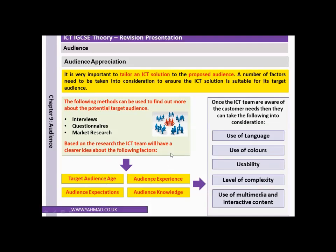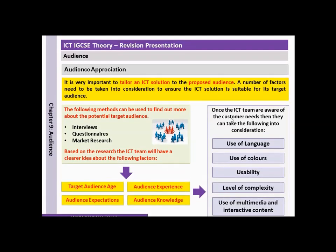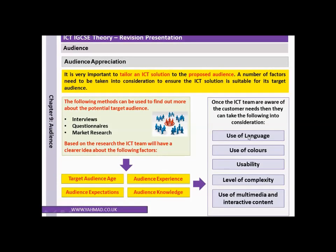Using this information, the ICT team, once they're aware of the customer's needs, can take the following into consideration: the use of language — whether to make the system complicated or use simple language — the use of colours, the usability, the level of complexity, and the use of multimedia and interactive content.